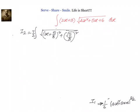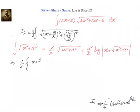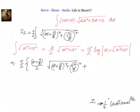I2 is now in the standard form of ∫ √(x² + a²) dx. The standard result is: ∫ √(x² + a²) dx = (x/2)√(x² + a²) + (a²/2) log(x + √(x² + a²)). Applying this, with x replaced by (x + 5/8) and a = √71/8, I2 = (7/2) × [(x + 5/8)/2 × √((x + 5/8)² + (√71/8)²)